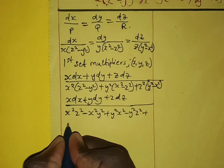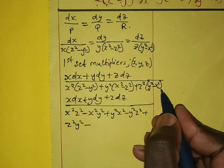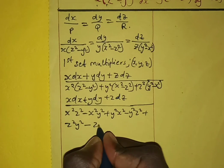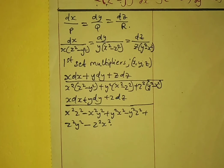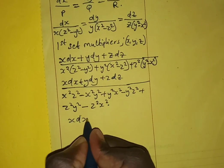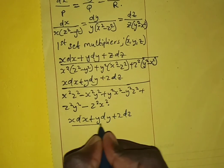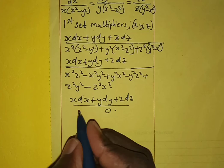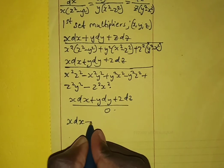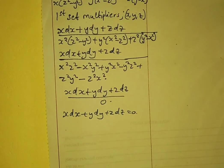Multiplying out gives z²y² minus z²x², and when we add all terms they cancel to zero. So we remain with x dx plus y dy plus z dz over zero, which means x dx plus y dy plus z dz equals zero. We now integrate this equation to get our first solution.